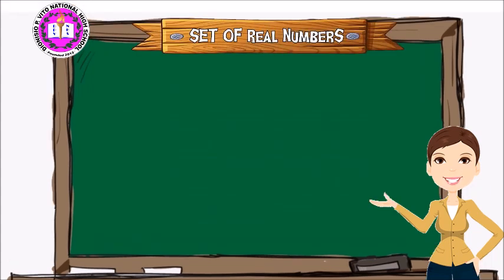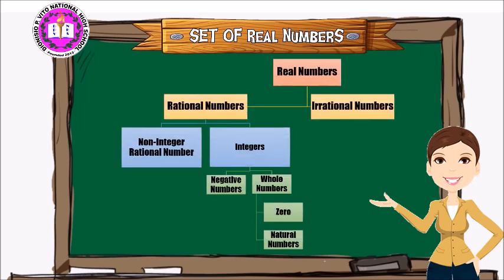Here we have the complete set of real numbers. Real numbers have two main subsets: rational numbers and irrational numbers. Under rational numbers, we have non-integer rational numbers and integers. Under integers, we have negative numbers and whole numbers. Under whole numbers, we have zero and natural numbers.